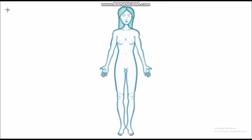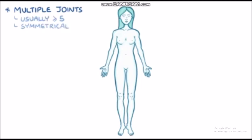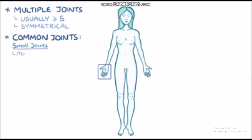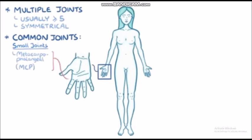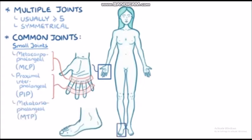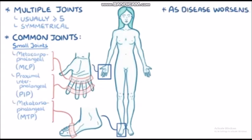Rheumatoid arthritis typically involves multiple joints — usually five or more — symmetrically, meaning the same joint groups on both sides of the body, like both hands. Commonly affected joints are the small joints, like the metacarpophalangeal joints and proximal interphalangeal joints of the hand, and the metatarsophalangeal joints of the feet. As the disease worsens, it can start to affect large joints like the shoulders, elbows, knees, and ankles.